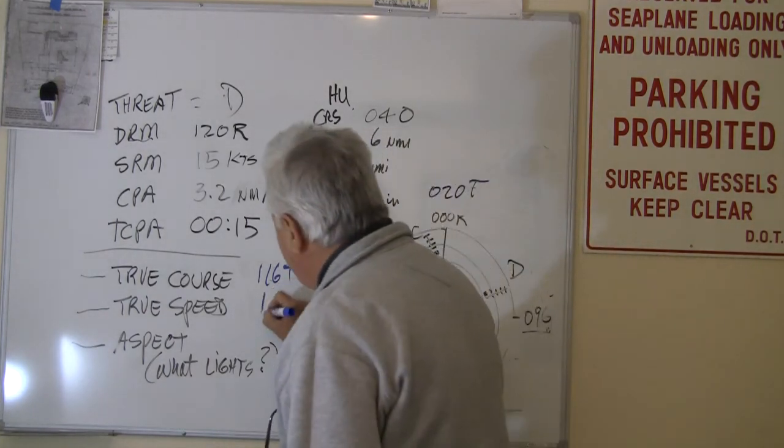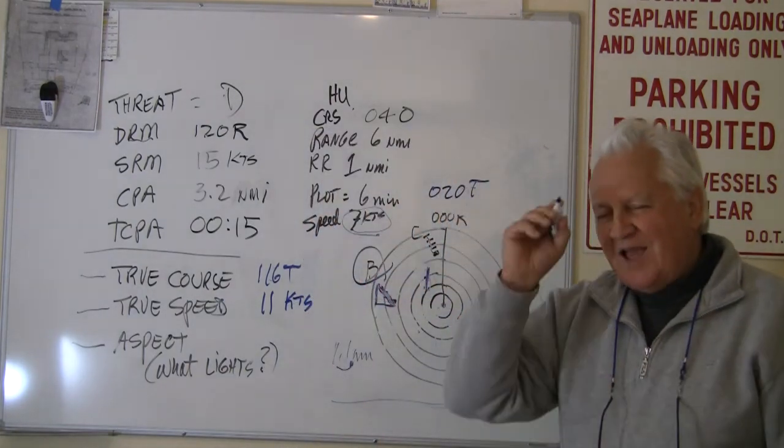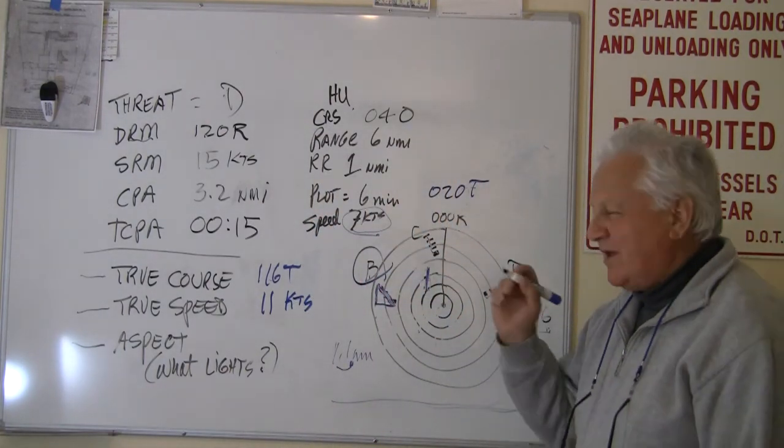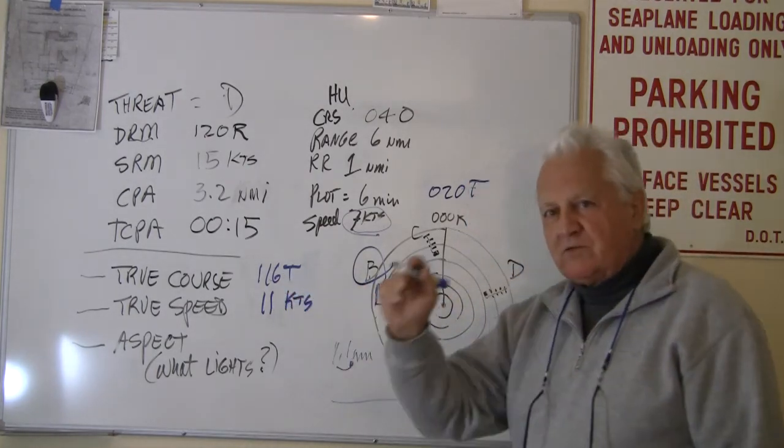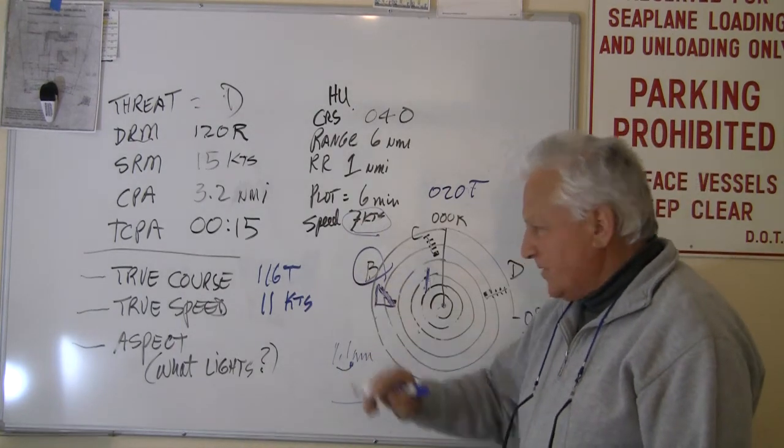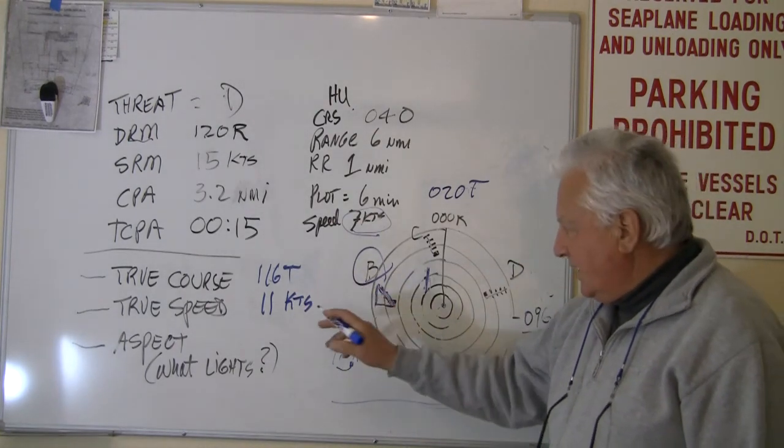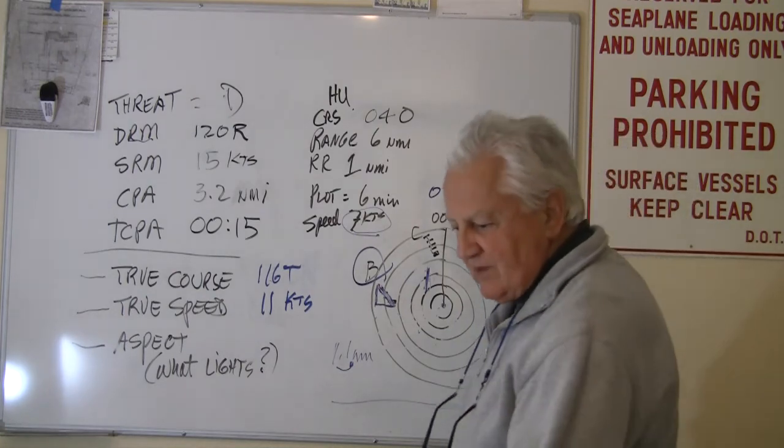And that 11 knots is as viewed on their knot meter at their helm. This is like magic, folks. It is amazing. We can look at their course as they're looking at it in their cockpit: 116 true and their knot meter at 11 knots. So the next thing we have to know, the next thing we have to figure out, is what is the aspect? What lights would we be seeing?